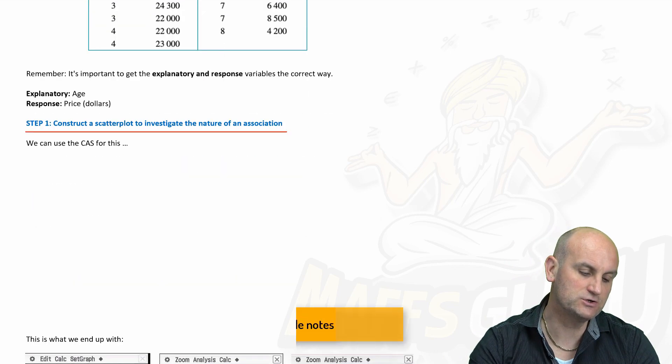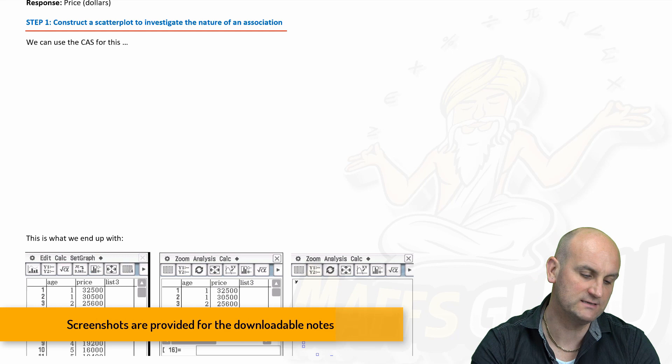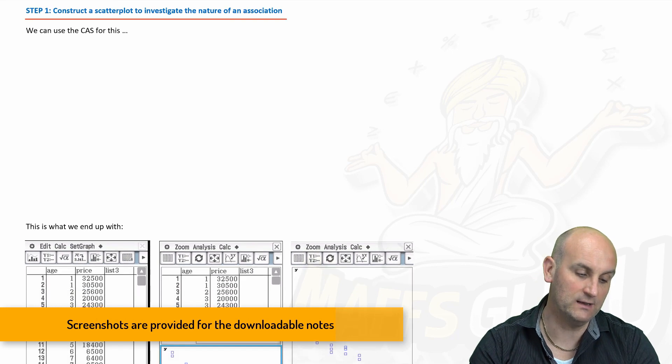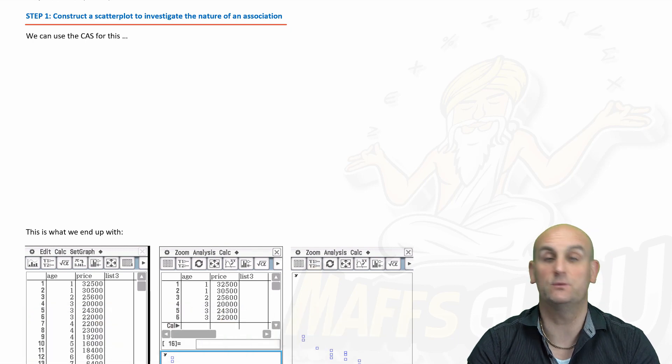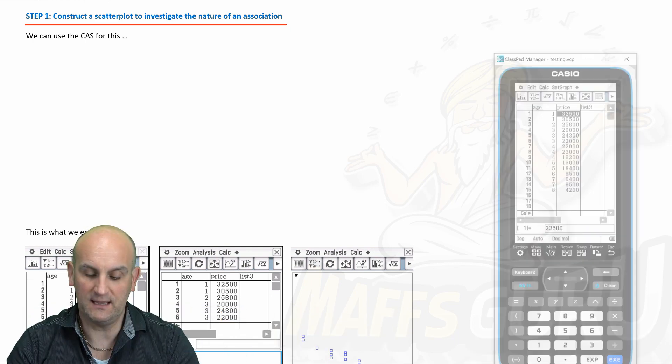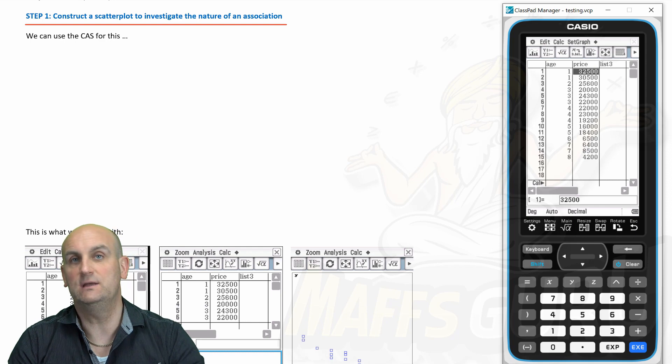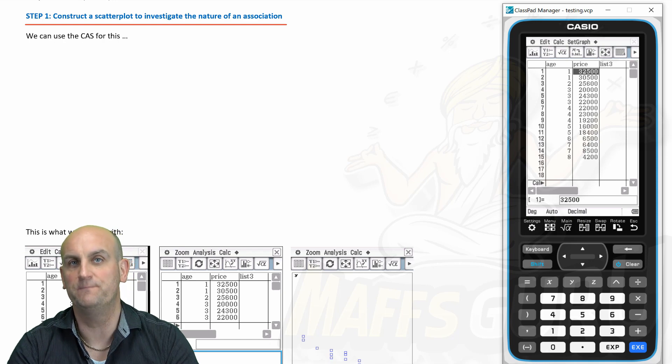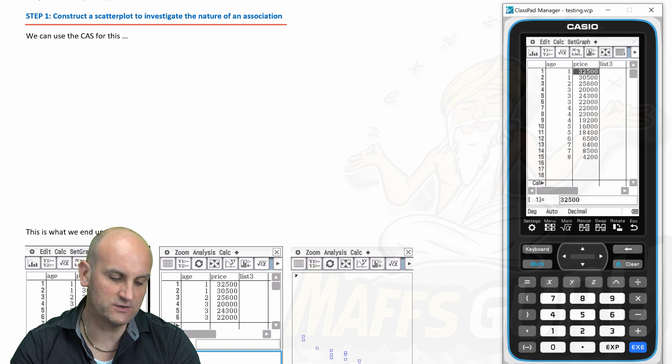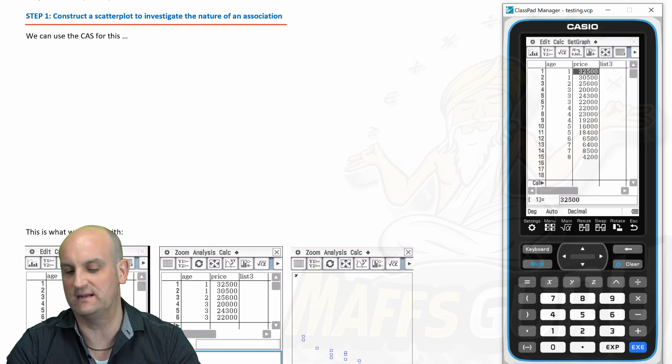So first things first construct a scatter plot. So I'm going to go through this step by step and number one says construct a scatter plot to investigate the nature of the association. All right so we can use a CAS. I'm going to fire up my CAS and there we go. Now as you can see what I have here is the screenshots below of my actual steps that I'm going to do because when you download these you should have something nice and easy to understand. So there's my data and it says construct a scatter plot. How do we do that?